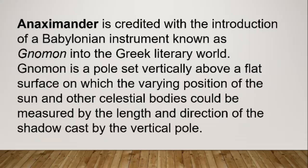Anaximander is credited with the introduction of a Babylonian instrument known as the gnomon into the Greek world. The gnomon is a pole set vertically above a flat surface on which the varying position of the sun and other celestial bodies could be measured by the length and direction of the shadow caused by the vertical pole. He used this to observe the movement of the sun, moon, and other celestial bodies. I will show you the picture.